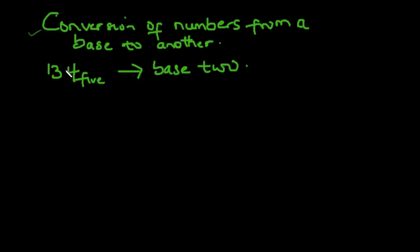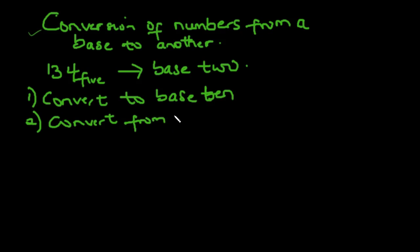Conversion of numbers from one base to another involves two steps. The first step is to first convert the given number to base 10. Then the second step will be to convert from base 10 to the required base.